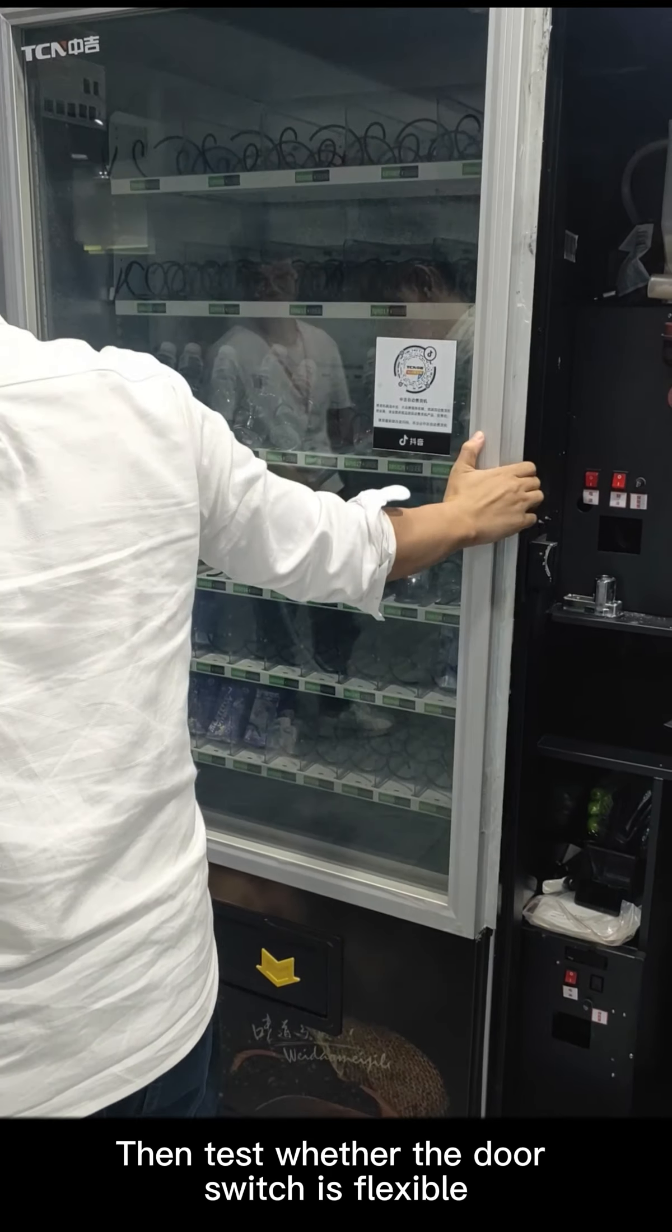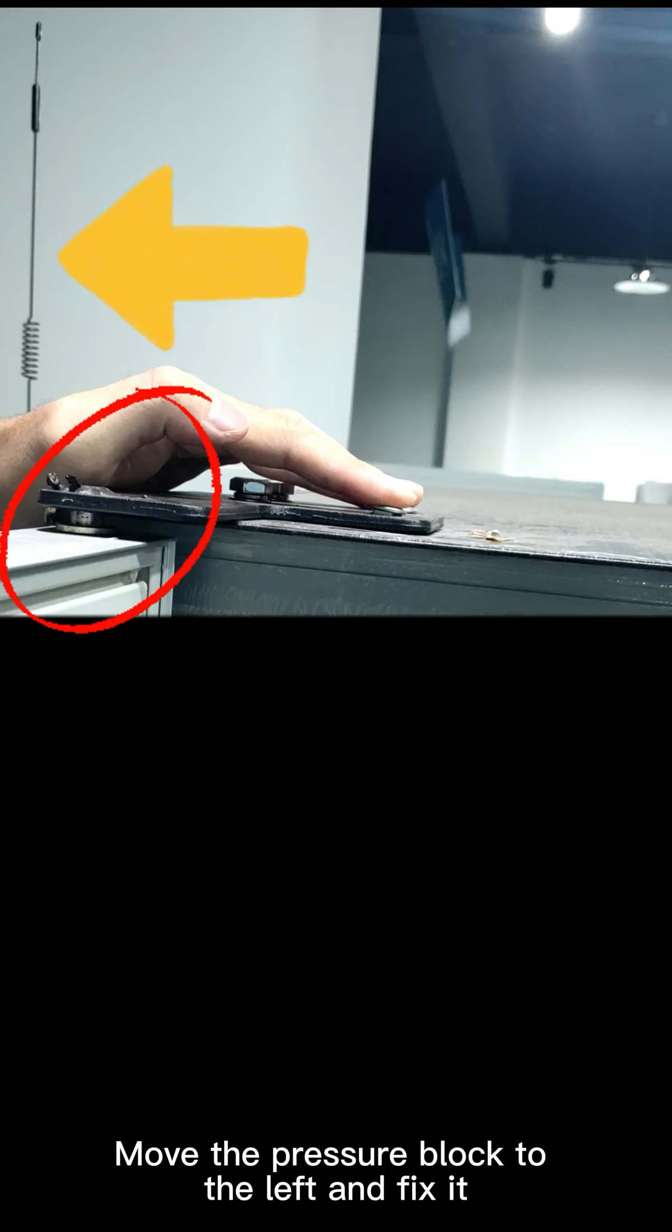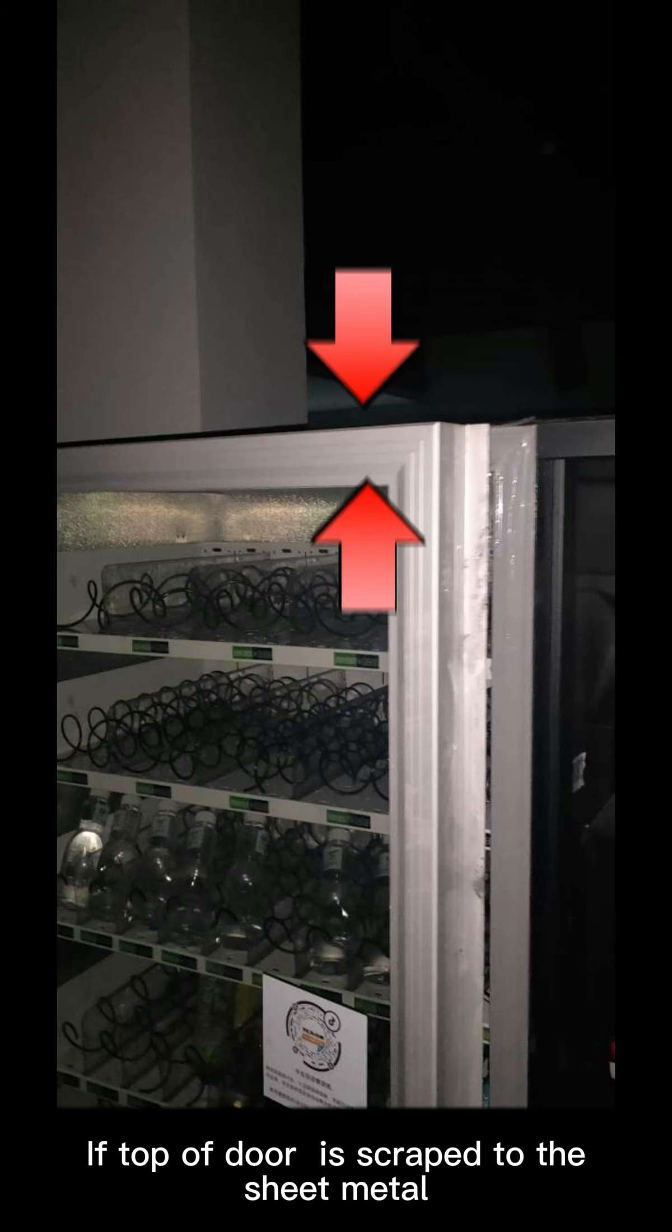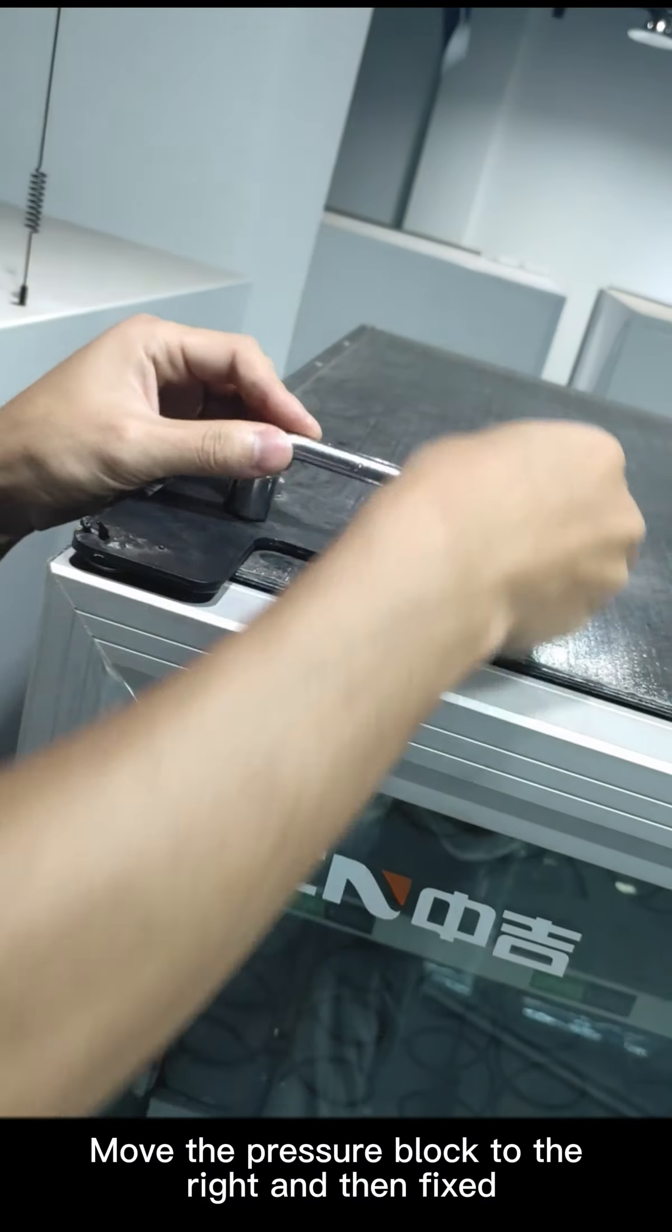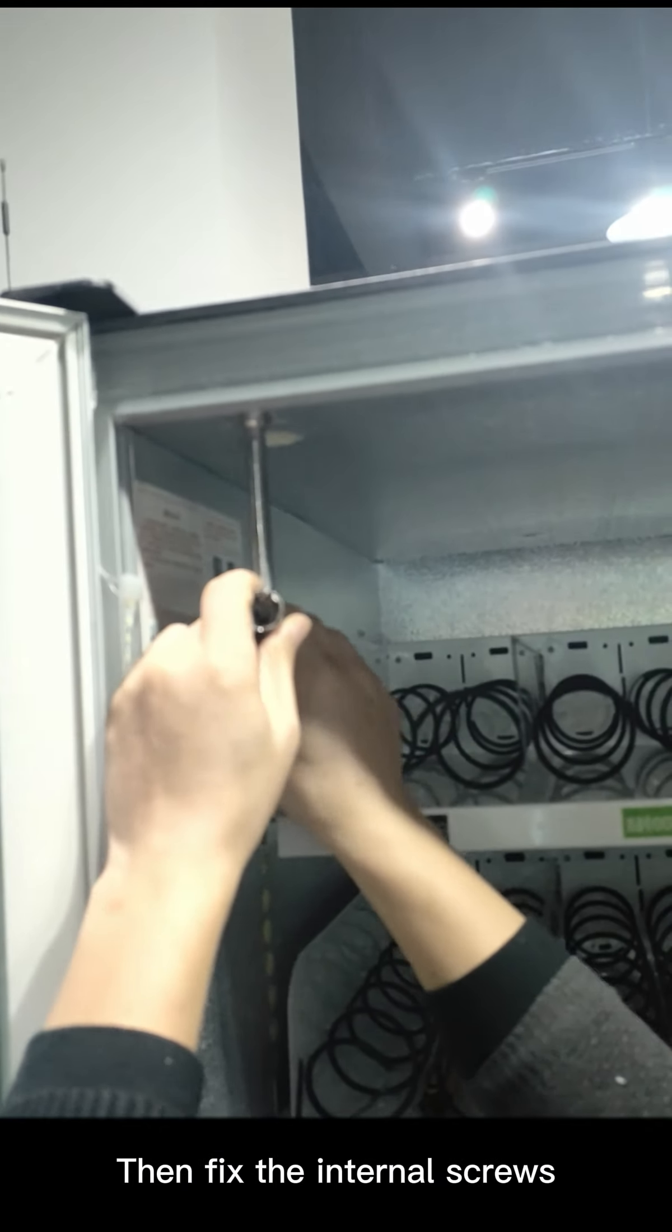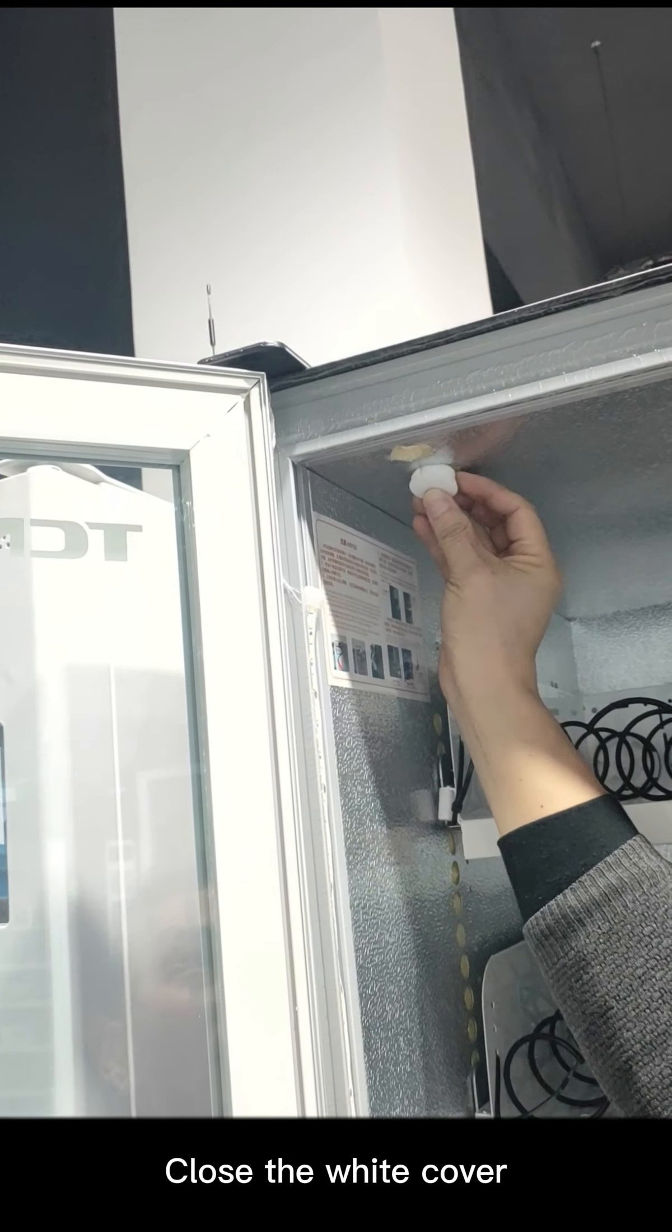Then test whether the door switch is flexible. If the bottom of the door will be scraped to the fetching box, move the pressure block to the left and fix it. If the top of the door is scraped to the sheet metal, move the pressure block to the right and then fix it. Then fix the internal screws. After fixing all the screws, put the original internal foam back and close the white cover.